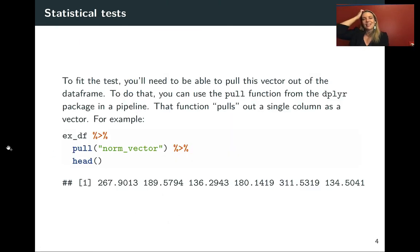The next thing to think about is how we could do this test. If you'll remember, the Shapiro-Wilk test function requires us to input a vector. So we need to figure out a way, if we have this stored in a data frame, to pull something out as a vector.